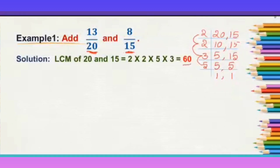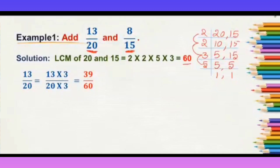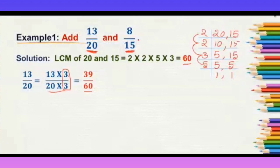As we have got 60 as the LCM, we have to change the denominator to 60. For the first fraction, 13 by 20: since 20 times 3 equals 60, we multiply both the numerator and the denominator by 3. So 13 times 3 is 39 and 20 times 3 is 60, giving us 39 by 60.